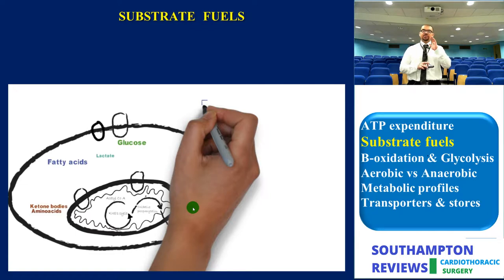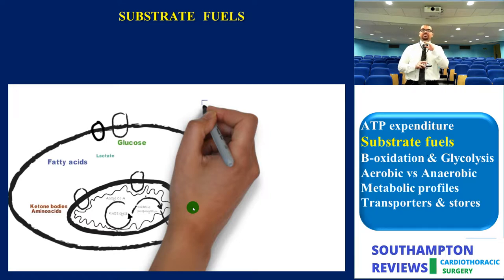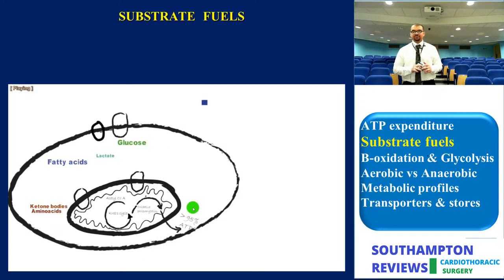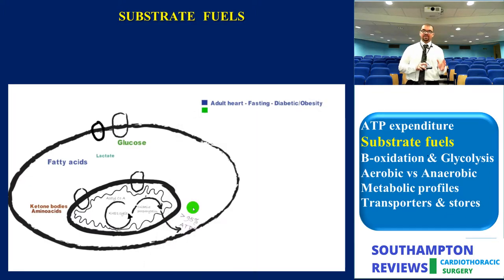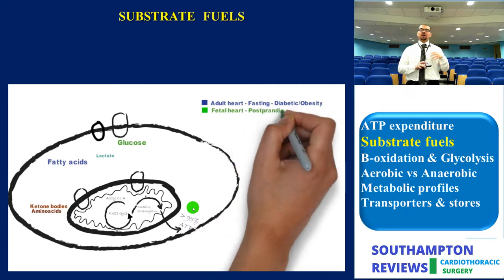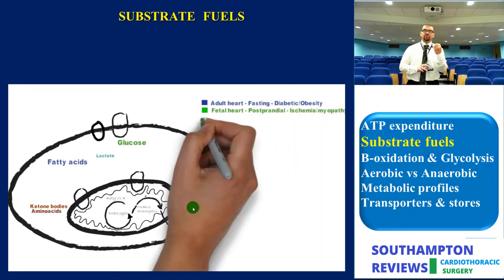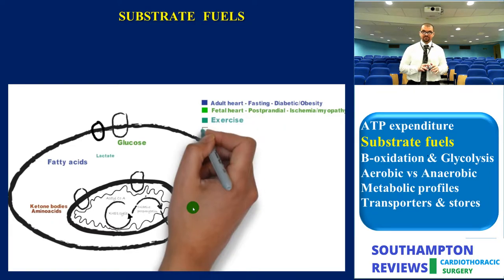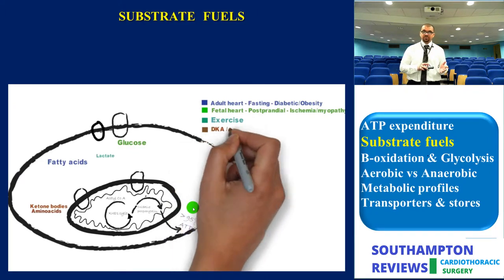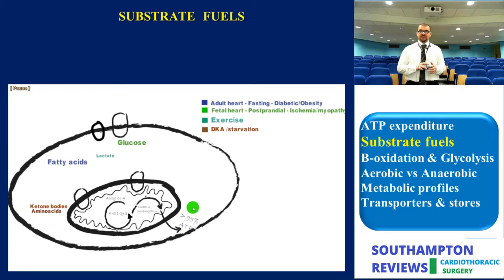The myocardium, on the other hand, enjoys the ability to use various substrate fuels: glucose, lactate, fatty acids, ketone bodies, and amino acids can all be used. Fatty acids represent the cardinal fuel during adult life, whereas glucose is the cardinal fuel during neonatal life. This is because fatty acids require a higher amount of oxygen to produce ATP, whereas glucose requires less. In neonatal life, lower oxygen saturations are expected due to PDA, PFOs, lung immaturity, etc., so the heart chooses the less oxygen-expensive fuel.